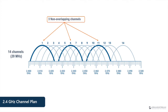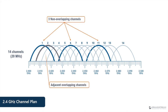By default, GWN access points will automatically select one of these channels during initial setup. Even if it is possible to use another combination of non-overlapping channels such as 4 and 9, or 5 and 10, I would not recommend doing that because you might end up selecting an adjacent overlapping channel, as shown in the image with channels 1 and 2. Selecting adjacent overlapping channels can significantly impact Wi-Fi performance due to interference. It is always critical to check the channels used at 2.4 gigahertz and ensure they are not overlapping.